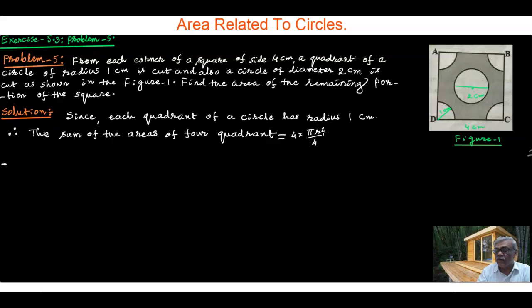I would like to write down 22/7 × 1 × 1, which equals 22/7. Let me call this equation 1. Also, the area of the circle of diameter 2, which has radius 1...